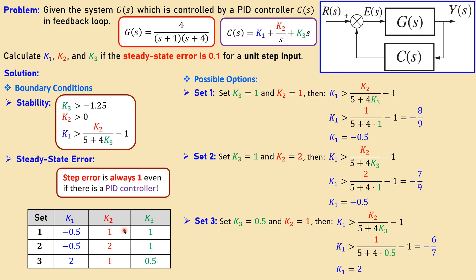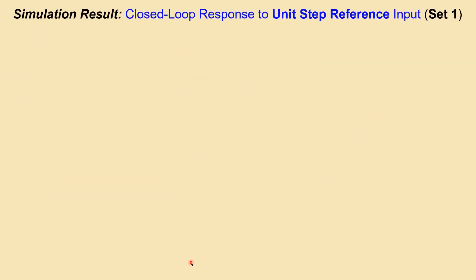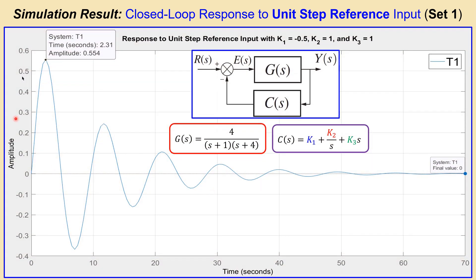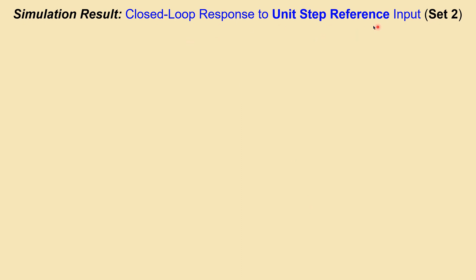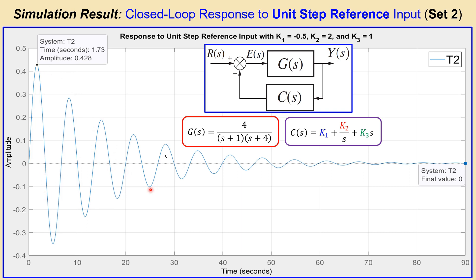Let's check the unit step responses in MATLAB for these three sets. For set one we see the output approaches zero — meaning the error is 1 — confirming our analysis. The response is oscillatory and quite active. For set two the response is even more oscillatory, ringing longer, with the output again approaching zero as the final value. The peak overshoot for set two is notably larger.